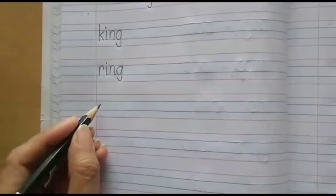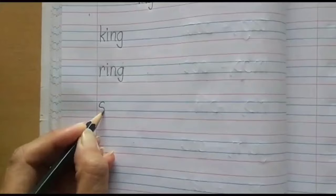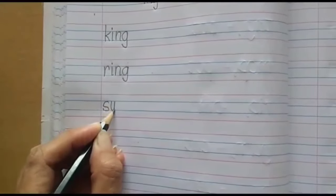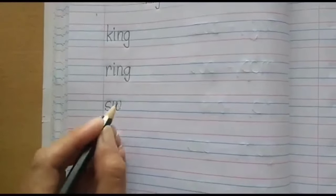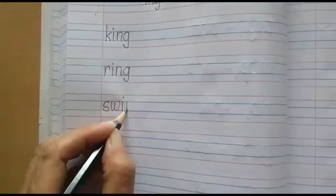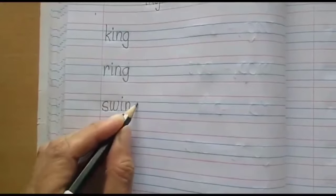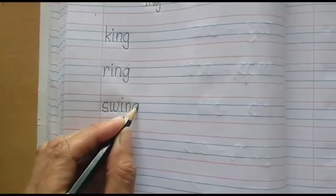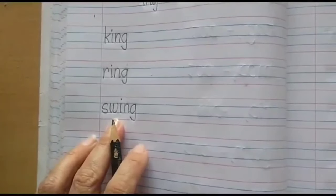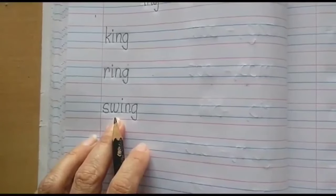After that, we will write another word. That also will come next to the margin. Let's write. The word is swing. Swing. Children, please read the word. The word is swing.